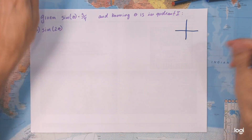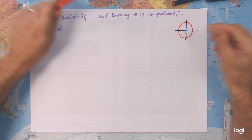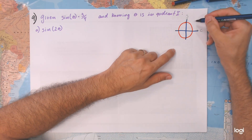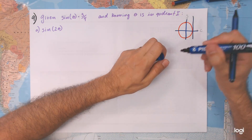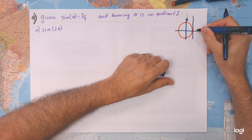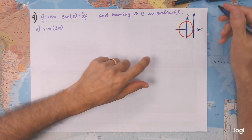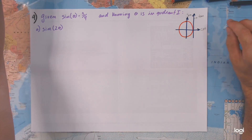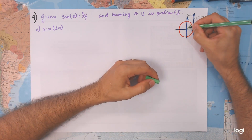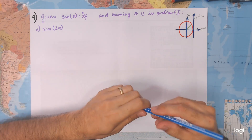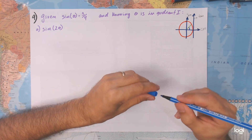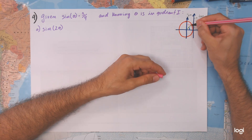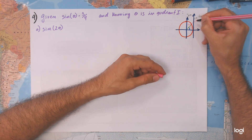When you have the sine — this is cosine, this is sine, and this would be the tangent — and this is the tangent, sine, cosine. For instance, if you have this angle in here, this angle, well, this is going to be the sine, this is going to be the cosine, and this is going to be the tangent of this angle.